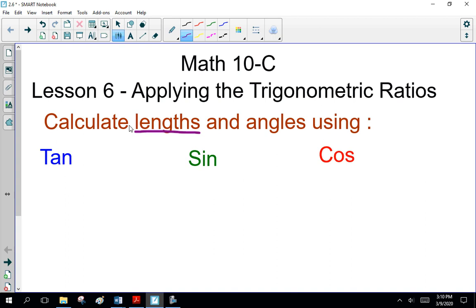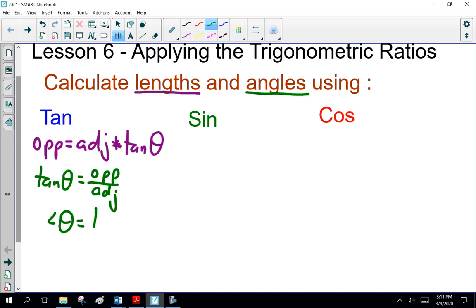Now the formulas on the formula sheet are nice, but remember I said for the lengths you rewrite them. I believe tangent is opposite equals adjacent times tan of theta. Now if you're going to use the angle exactly as it is on the formula sheet, tan of theta is opposite over adjacent. So if I give you the two sides and ask for the angle, use tan theta equals opposite over adjacent, and then angle theta is tan to the minus one of opposite divided by adjacent.